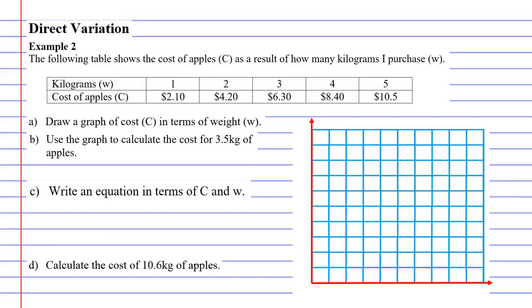Example 2: the following table shows the cost of apples C as a result of how many kilograms I purchase W. So we can see this table here, our kilograms go from 1 to 5, and then as our kilograms go up, the cost of the apples go up, of course.